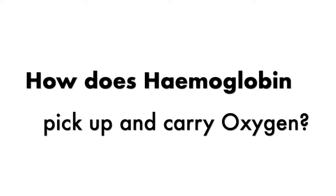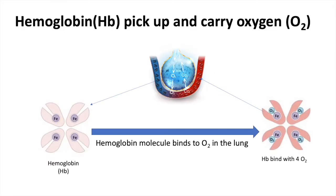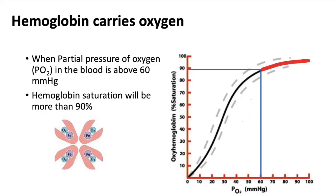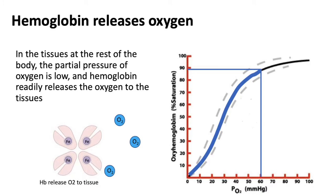How does hemoglobin pick up and carry oxygen? In the blood flowing through the lungs, hemoglobin molecules bind avidly to oxygen. As long as the partial pressure of oxygen in the blood is above 60 mmHg, the hemoglobin saturation will be more than 90%. In the tissues of the rest of the body, the partial pressure of oxygen is low, as the oxygen has already been used up by the cells. In this case, the hemoglobin will readily release the oxygen to the tissues.